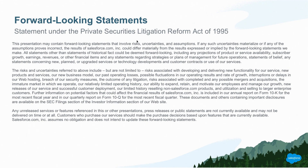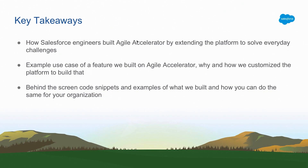Let's get into our session today. Let's first look at the key takeaways. I'm first going to give you a quick introduction about what is Agile Accelerator and how we extended the platform to build it. Then we're going to pick a specific example use case of a specific feature in Agile Accelerator and look into how we customized the platform to build it. Then Mike is going to go into the more interesting aspects — code snippets, screenshots, examples, and custom queries of how we actually went about building this custom feature.